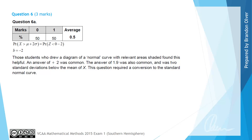From the examiner's report, 50% of students got this correct and 50% didn't. Students who drew a diagram of a normal curve with relevant areas shaded found this helpful in obtaining the mark. An answer of positive 2 was common — that occurs if you use the formula but don't consider that Z less than B must be equivalent. The incorrect answer of 1.9 was also common, arising from taking two standard deviations below the mean of X rather than converting to the standard normal Z.